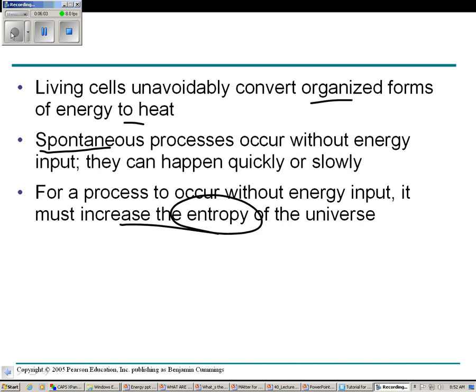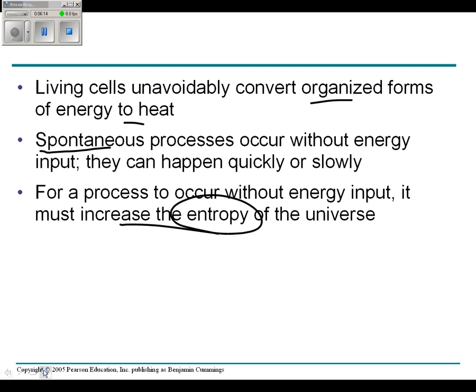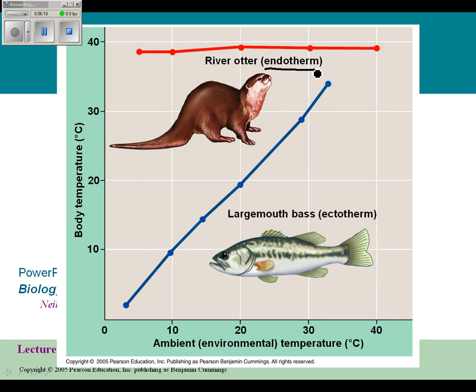A couple examples of how organisms use energy. When we talk about energy and heat with organisms, we generally use the terms warm-blooded and cold-blooded. Now you're going to use the term endotherm and ectotherm. An endotherm, also known as warm-blooded, is an organism that controls its own body heat. For example, the river otter is using the heat that it is generating to heat itself, whereas a largemouth bass is an ectotherm. Its body temperature is the same as the environmental temperature, and that's what this graph is showing you.